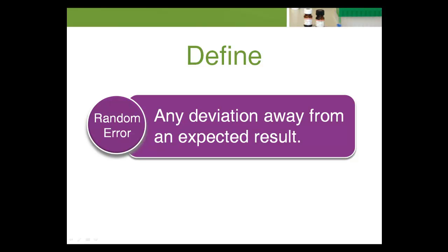Technically, random error is any deviation away from an expected result. For QC results, any positive or negative deviation away from the calculated mean is defined as random error. There is acceptable or expected random error as defined and quantified by standard deviation. There is also unacceptable, unexpected random error — that is, any data point outside the expected population of data, e.g., a data point outside the positive-negative 3s limits.